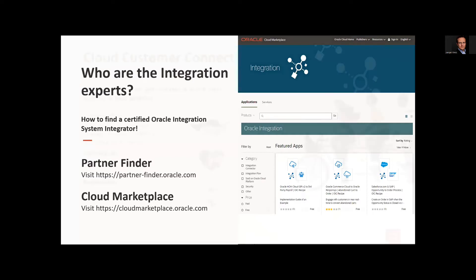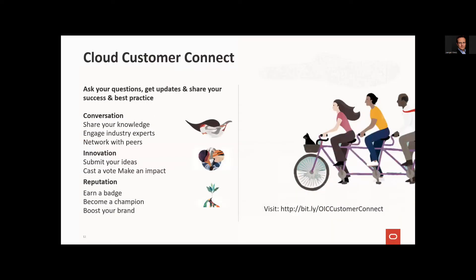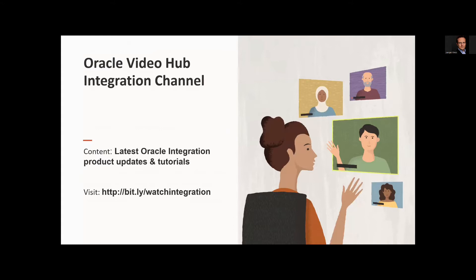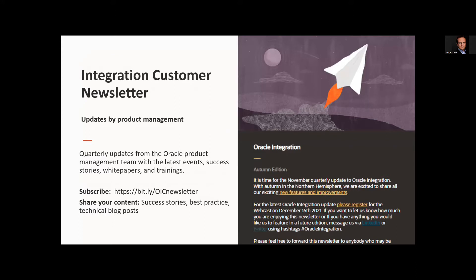For example, Avancro offers third-party integration adapters for SAP or Amazon, or pre-built recipes from Activate. For questions and support, you can collaborate at Cloud Customer Connect — in discussion forums you can share your knowledge, engage with industry experts, and network with the team and peers. You can also submit innovations and earn personal badges. Today's webcast will be published at Oracle Video Hub including the slides. For regular updates, please subscribe to the Oracle Integration Newsletter — quarterly updates include the latest product information, events, success stories, white papers, and training.